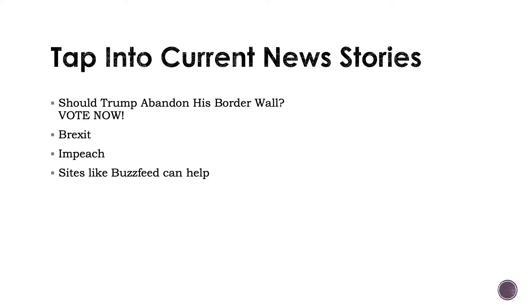Firstly, where do you get all the data from? Justin shares quite a bit in his presentation on what to do. In this case, it's tapping into what is happening in the news — anything from Facebook breaches, data breaches, Trump and border, Brexit, the impeachment that's currently going on. You can get a lot of the data from sites like BuzzFeed. That's the first place to get ideas of content for what you need to create your decision trees or campaigns about, as Justin shares.